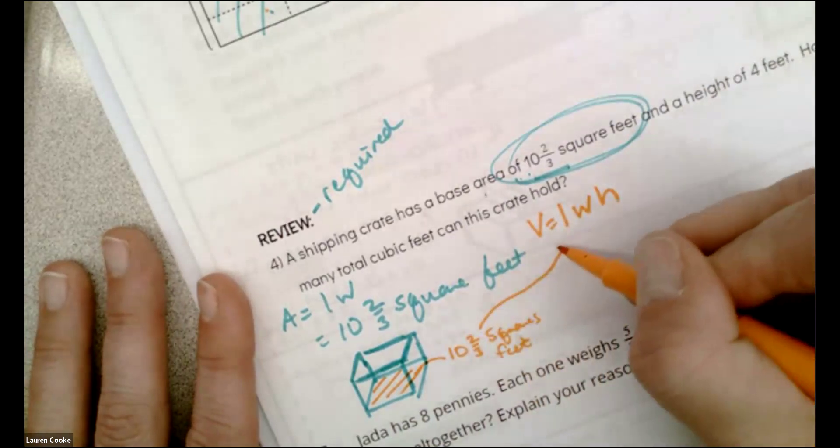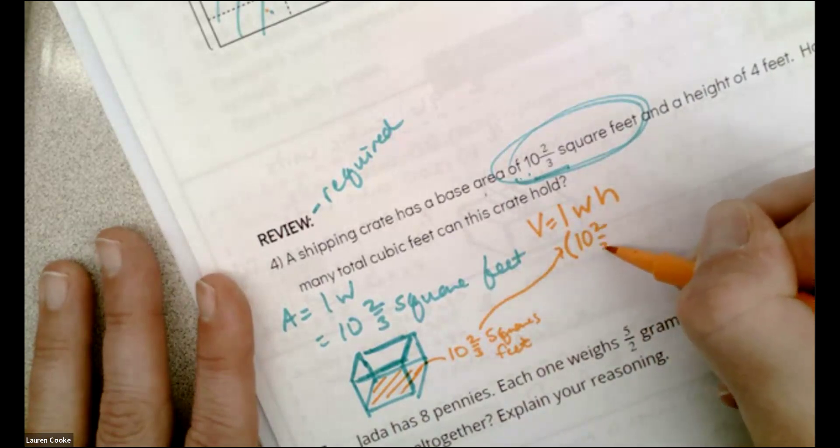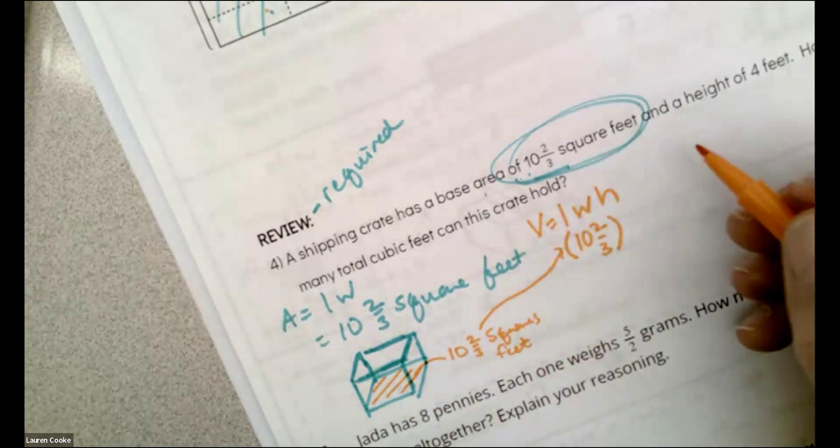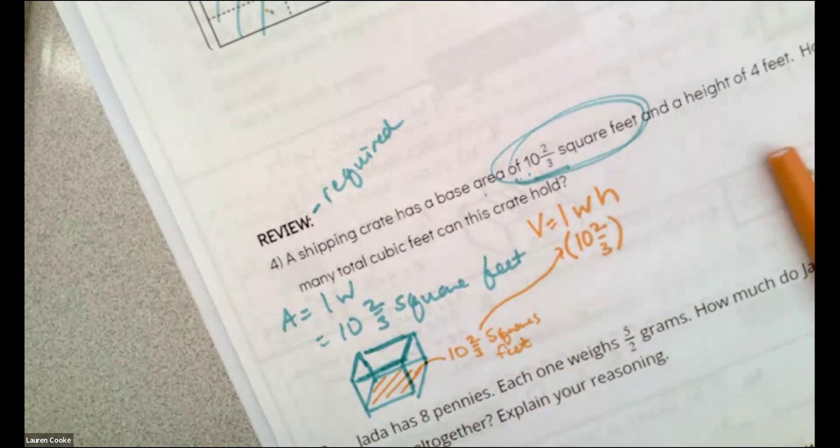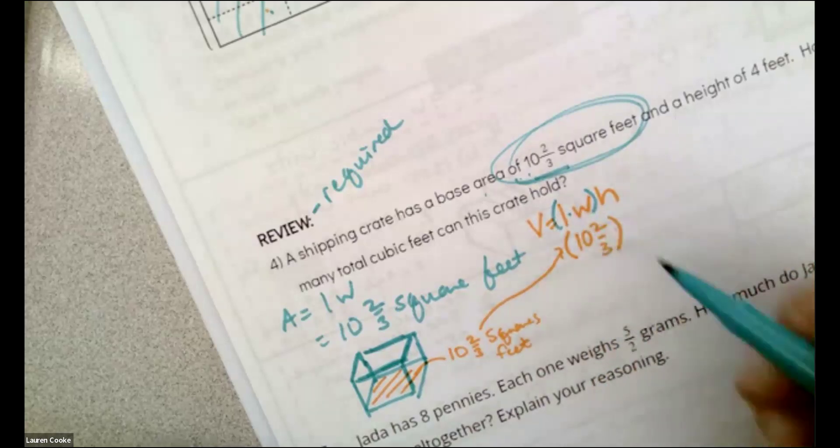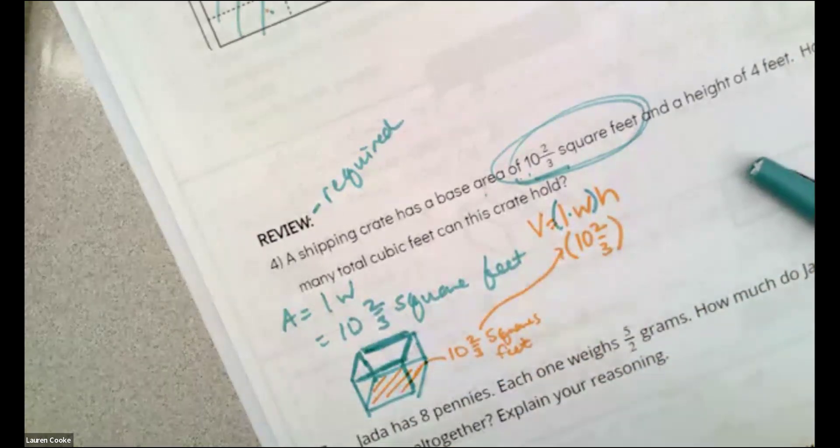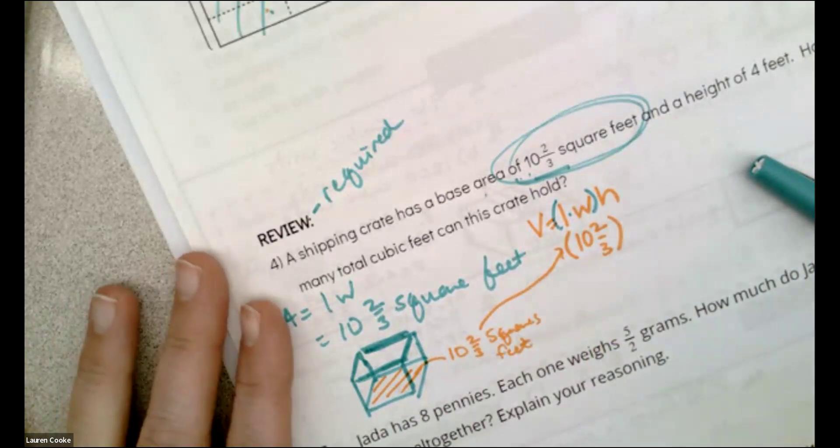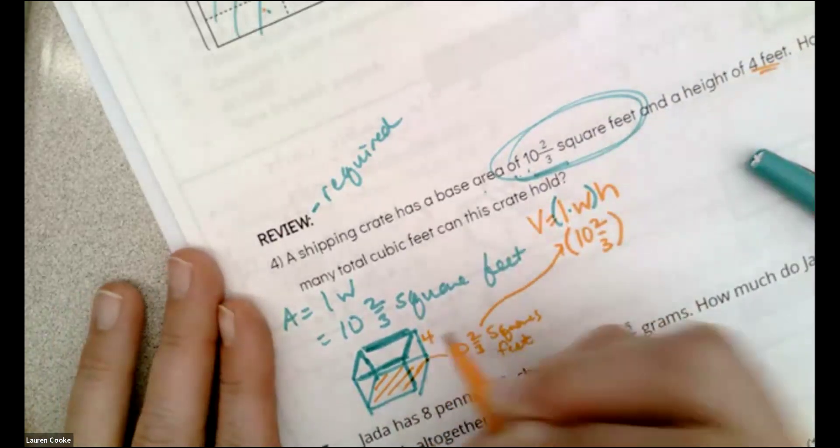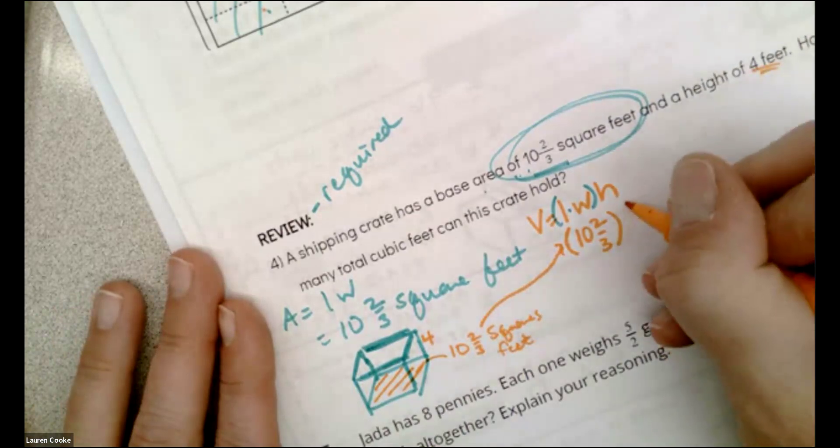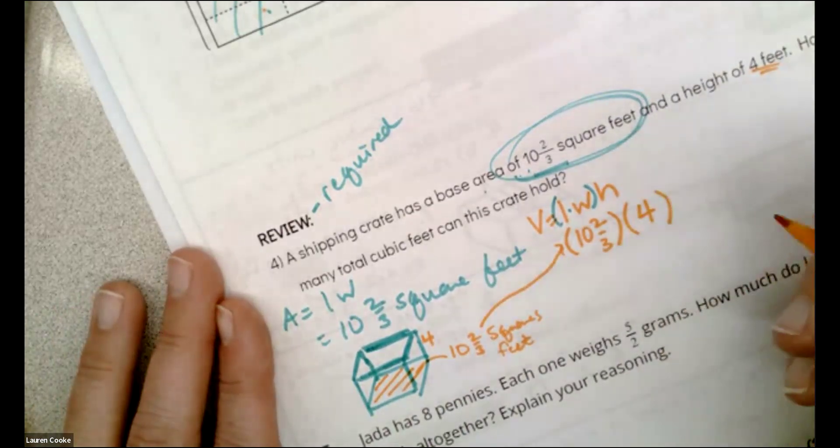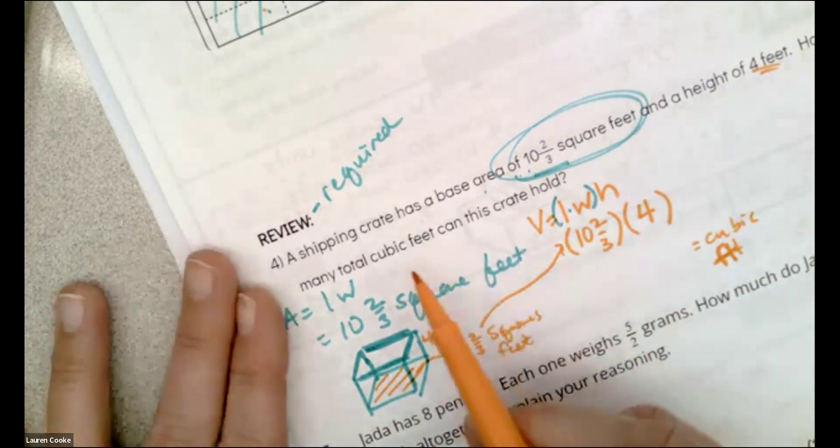And so with my volume, length, width, height, I already know two of the dimensions, and so I'm going to replace those two dimensions with parentheses because it holds in the number with 10 and two-thirds, because that is, that's length times width is 10 and two-thirds. They already have the area. And now my base is done, so now let's look at my height. My height is four feet.